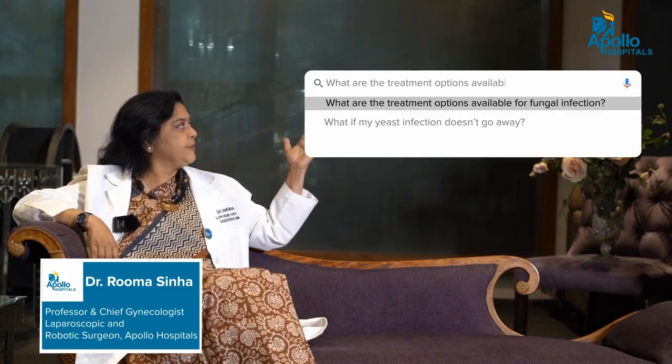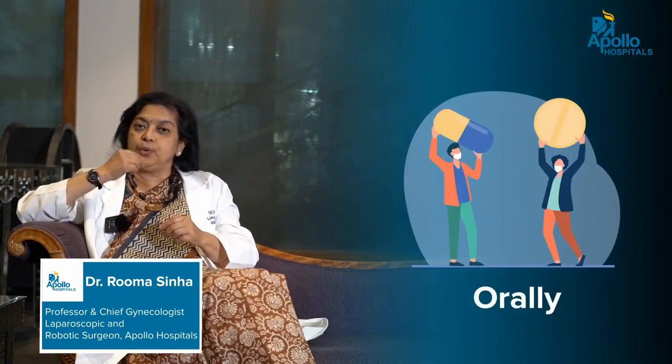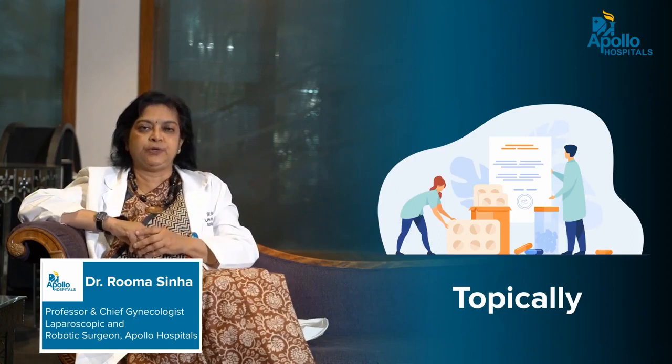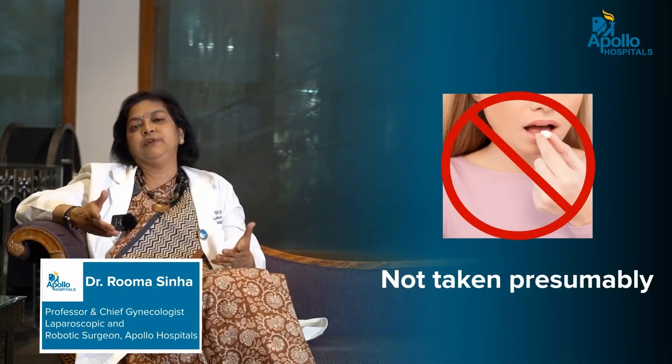What are the treatment options available for fungal infection? The fungal infection that one suffers as a form of vaginitis can be treated by medication both orally as well as topically, which means local application. The oral medications are usually anti-fungal drugs. The topical medications are in the forms of either pessaries or ointments which one can apply at the level of the vagina, which will cure the infection as well as give temporary symptomatic relief. But one must remember that these medications should not be taken over-the-counter, presumably assuming you are having a vaginal infection. I find many times women come to my office where they have treated themselves for fungal infection, but they actually have some other infection.